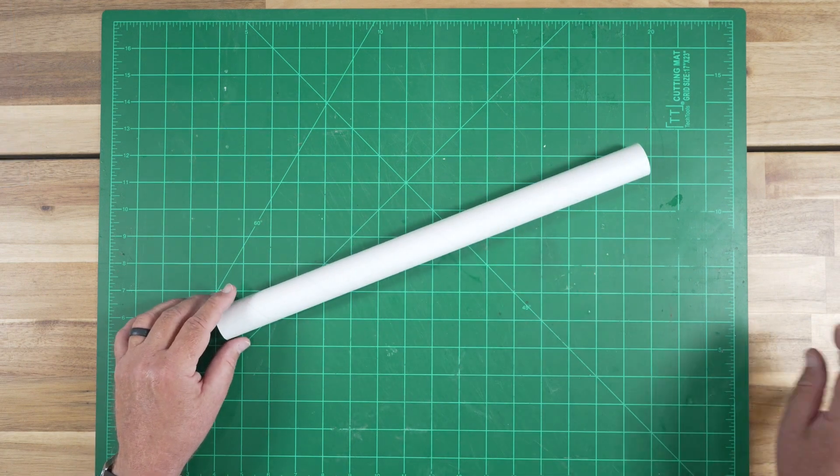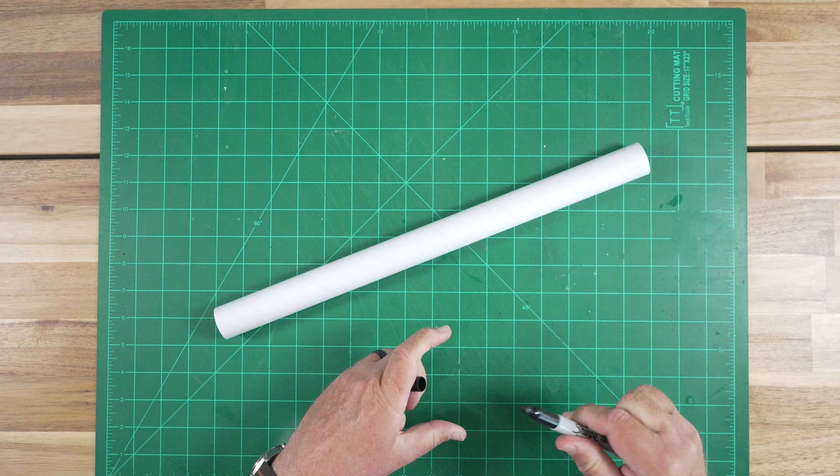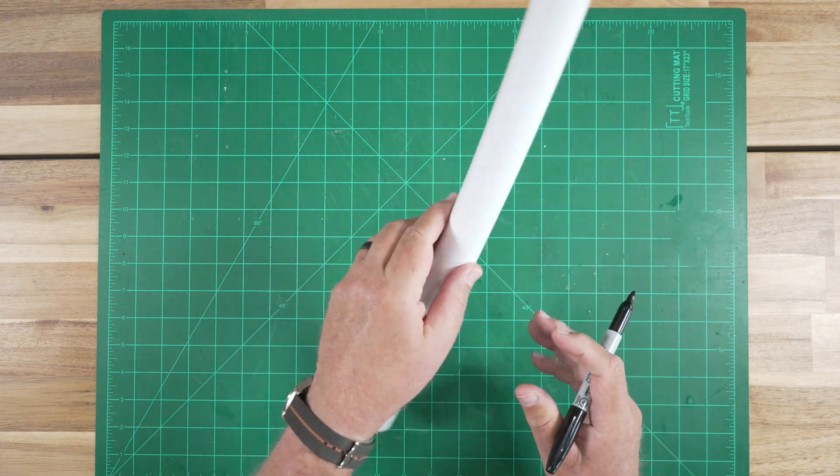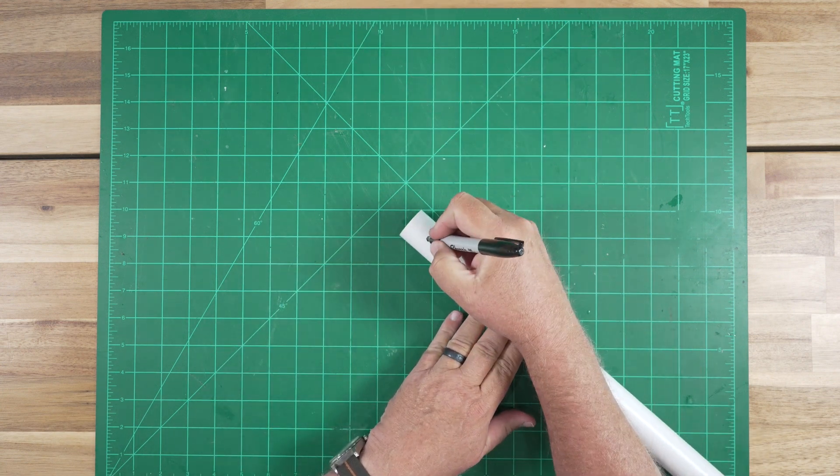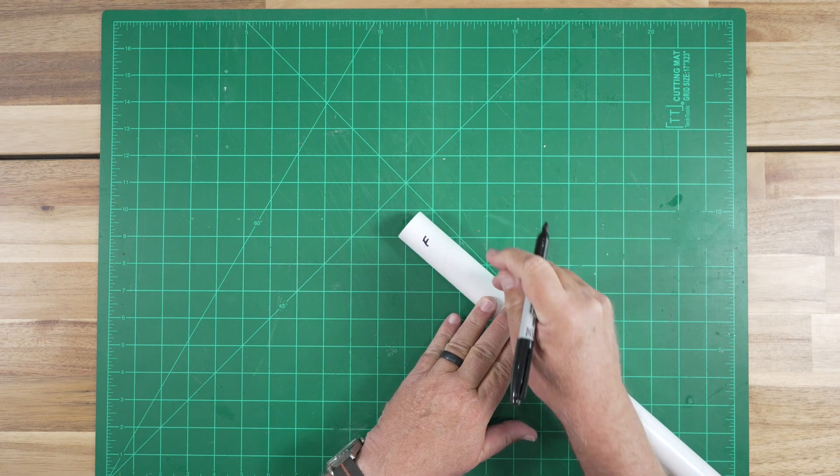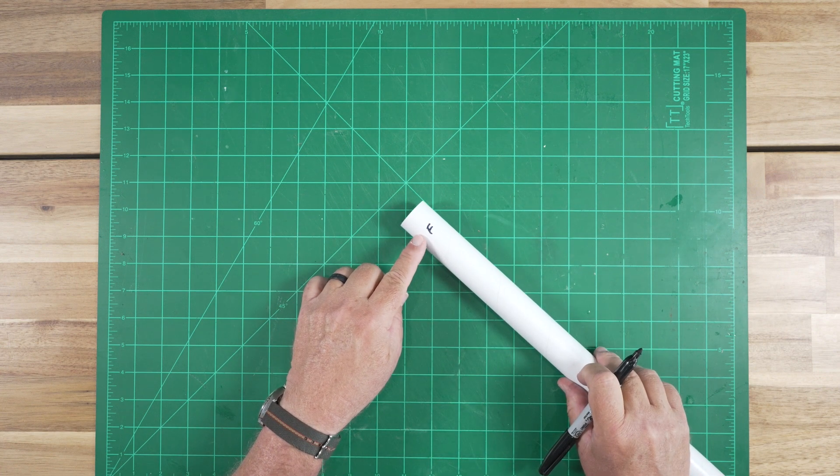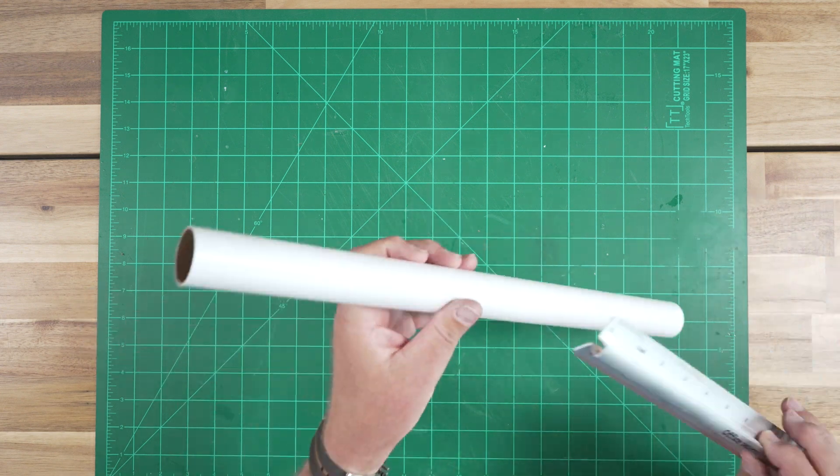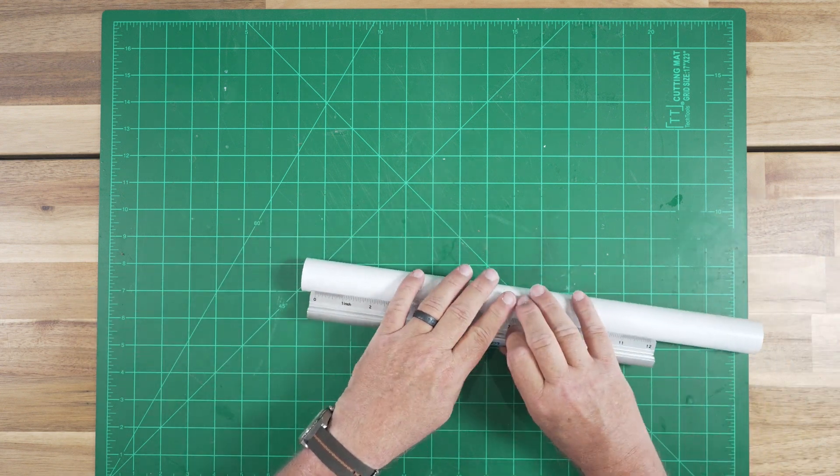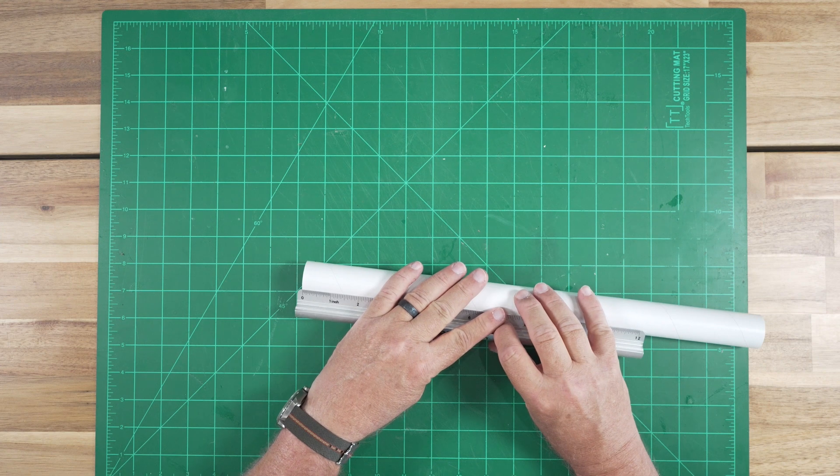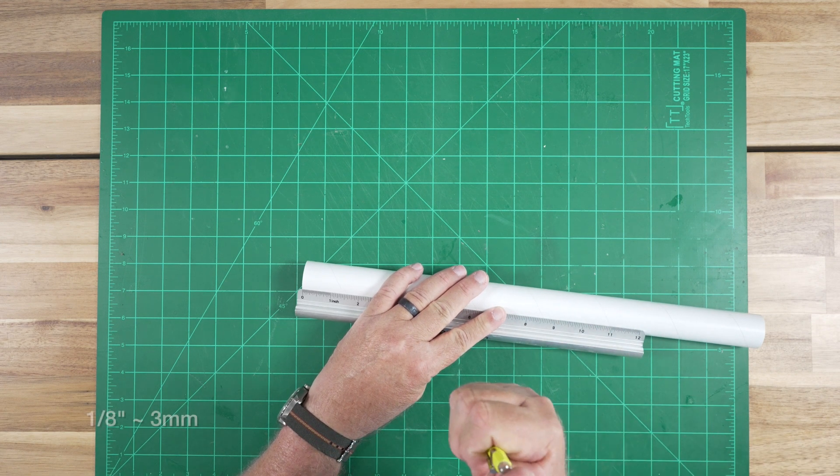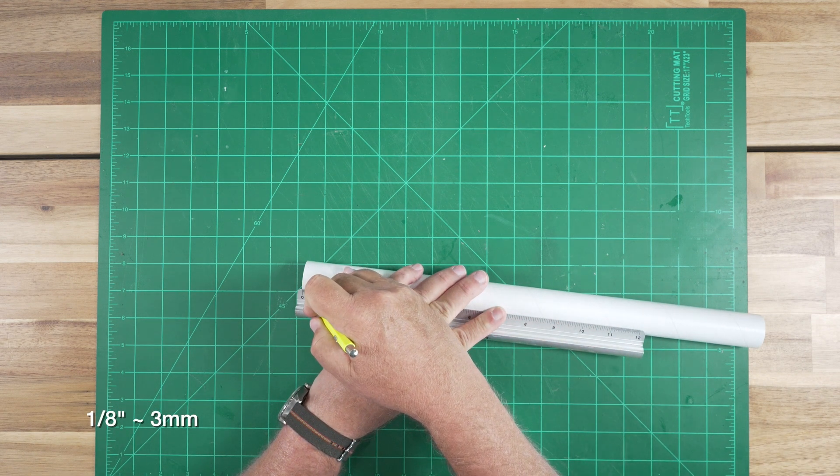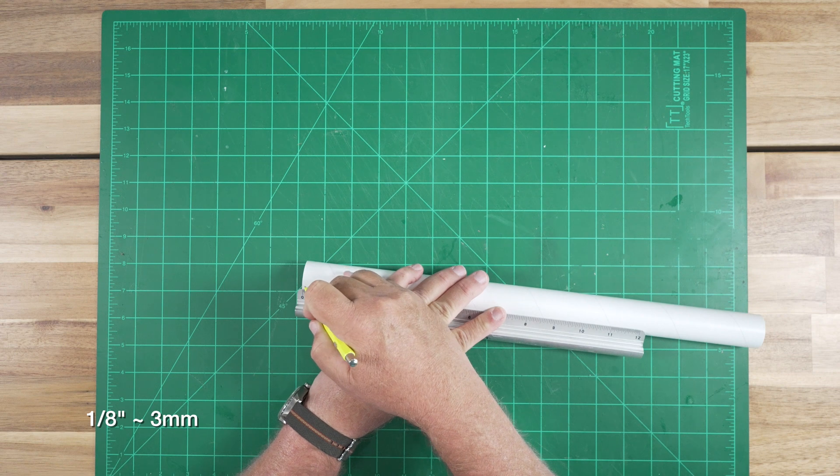let's mark the locations that the centering rings will be installed on our motor mount tube. I'm going to designate this as the fore end, the front, of our motor mount tube. The first mark is placed 1/8 of an inch, that's about 3 millimeters, from the forward end of the tube.